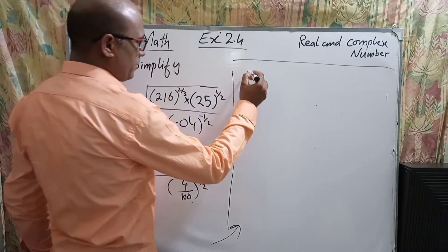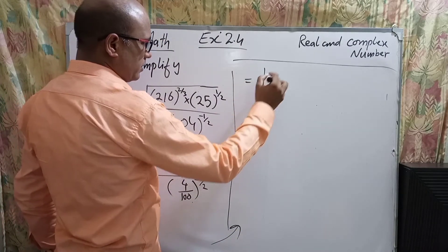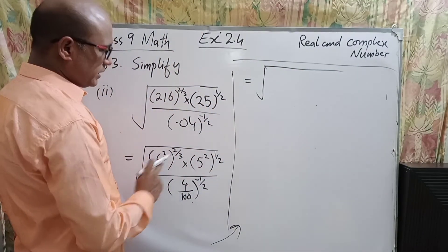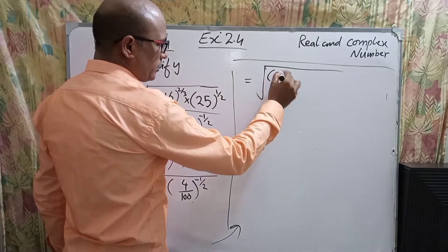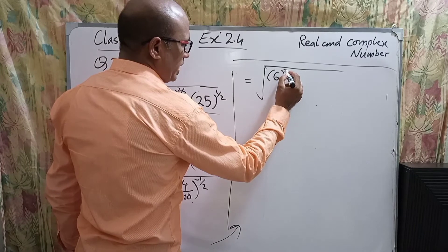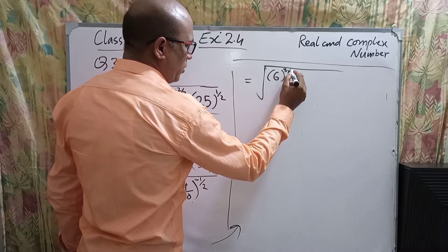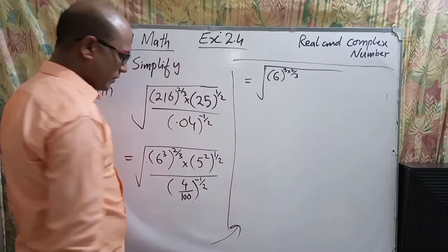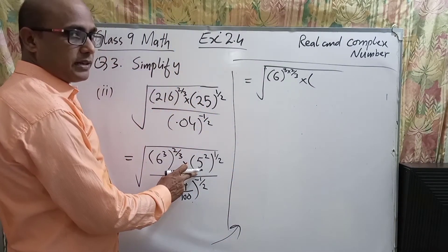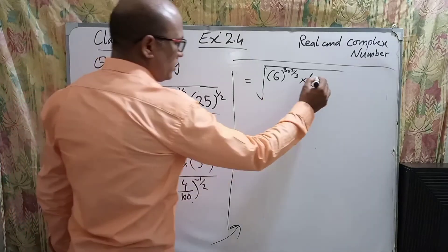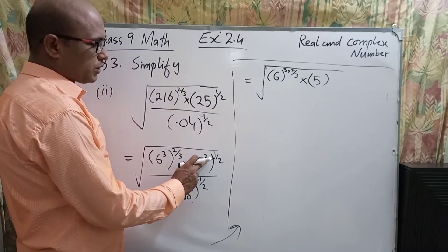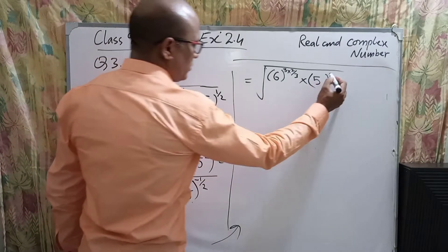In the next step, 6 will remain inside the bracket but its inner exponent 3 will be multiplied by the whole exponent 2/3. Similarly for 5: the inner exponent 2 will be multiplied by the whole exponent 1/2.